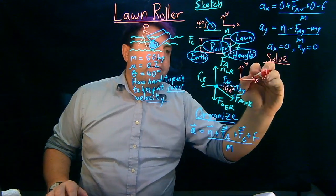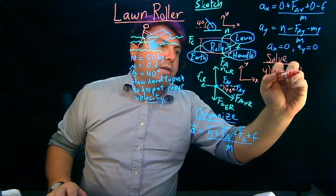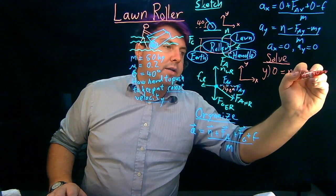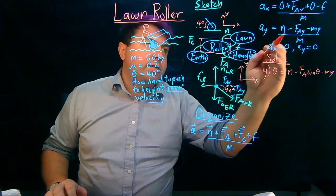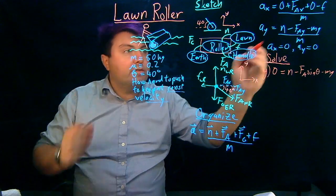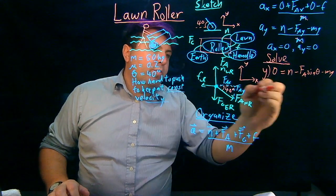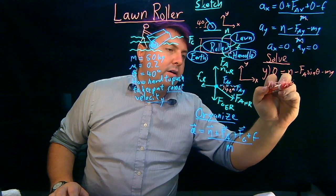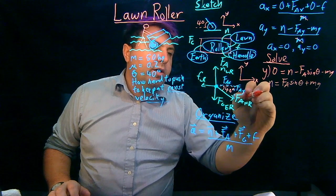In the y direction, we have zero is equal to normal minus f_a_y, so f_a sine theta minus mg. And we can divide by the mass, but since it's equal to zero, we can kind of cancel those out in previous. So if we bring everything over, we can then say that our normal is equal to f_a sine theta plus mg. And we can look in the x direction.